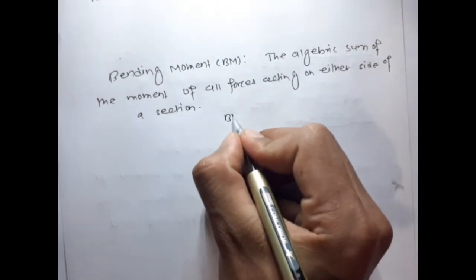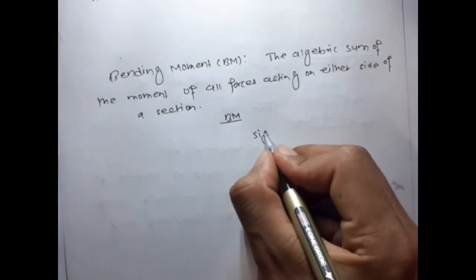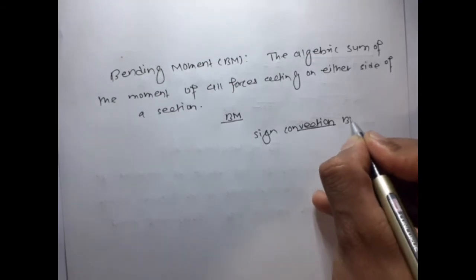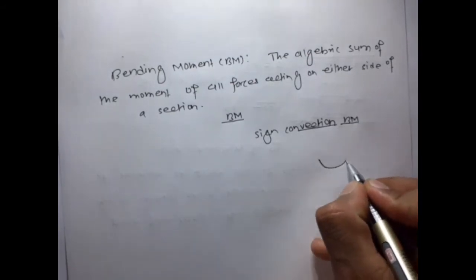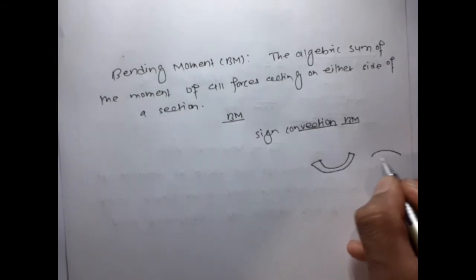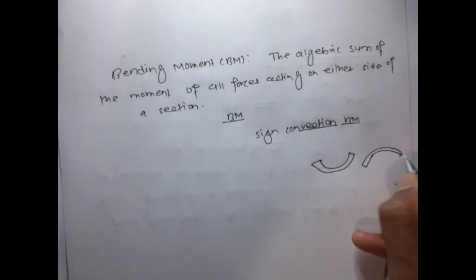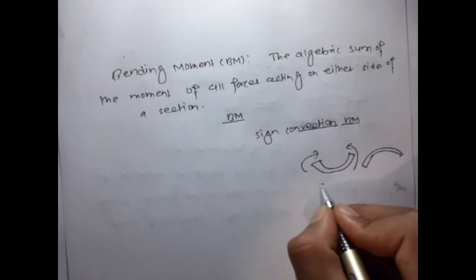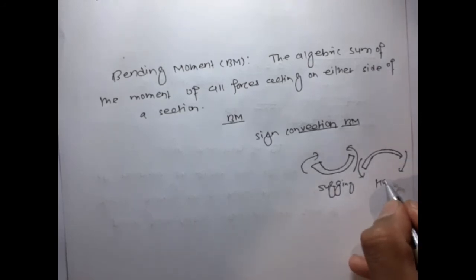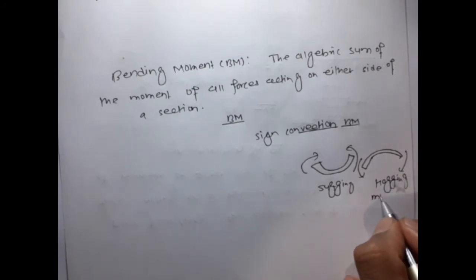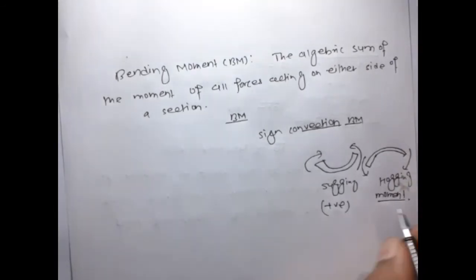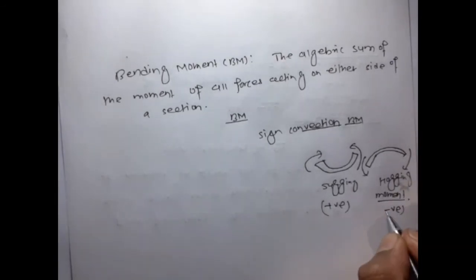It is denoted by BM, and for the sign convention of bending moment, we take sagging moment as positive and hogging moment as negative. This is a sagging moment and this is a hogging moment. In case of bending moment, sagging moment is always positive and hogging moment is always negative.